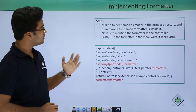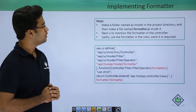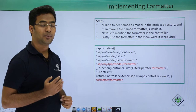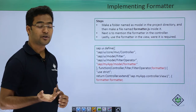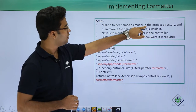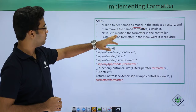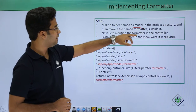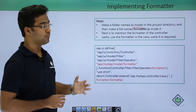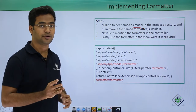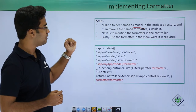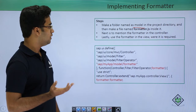Here we can see the steps for implementing a formatter. We are implementing a custom formatter, and for that we have to create a formatter.js file within the model folder or the util folder. Here I have made a folder named model in the project directory, and then created a file named formatter.js inside the model folder. Next we have to reference the formatter in the controller, and then use it in the view. These are the 3 steps to use a formatter.